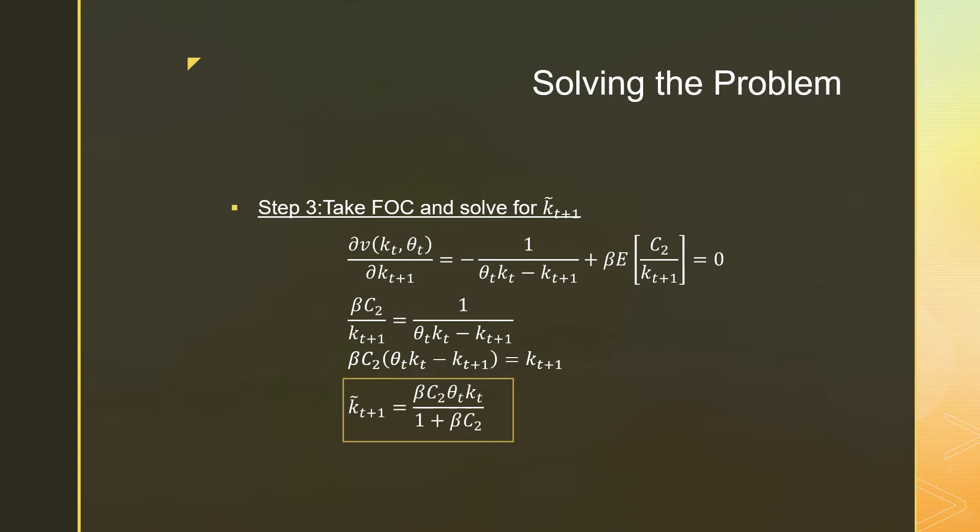Taking the first order condition, this is just some math. I'm not going to really speak it out. But we get a result that's very similar to what we did in our regular cake eating problem without these shocks. And we just have beta C2 theta T KT all over 1 plus beta C2. So the only thing new here is this shock term that's just being dragged along with this cake term, KT.